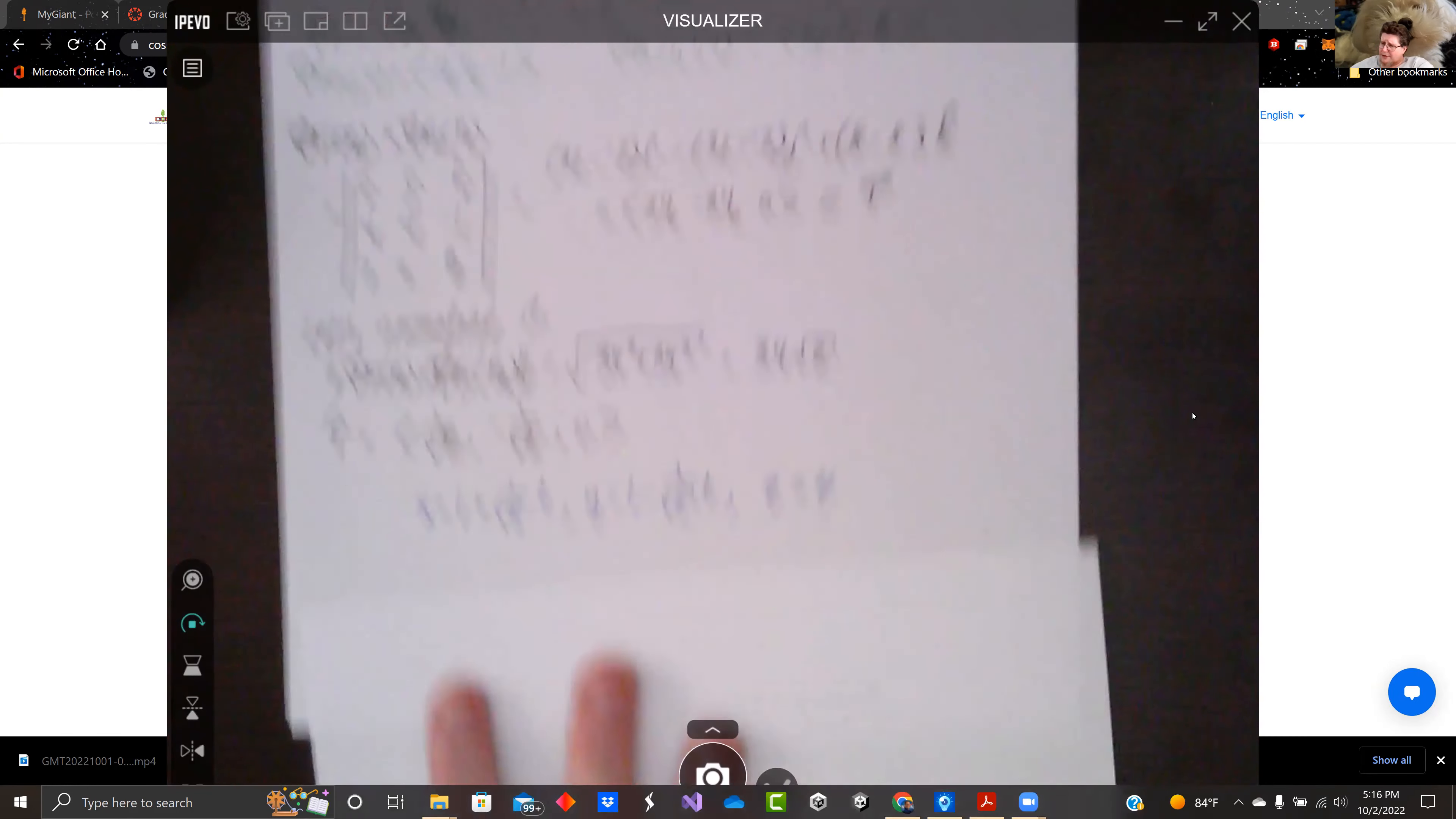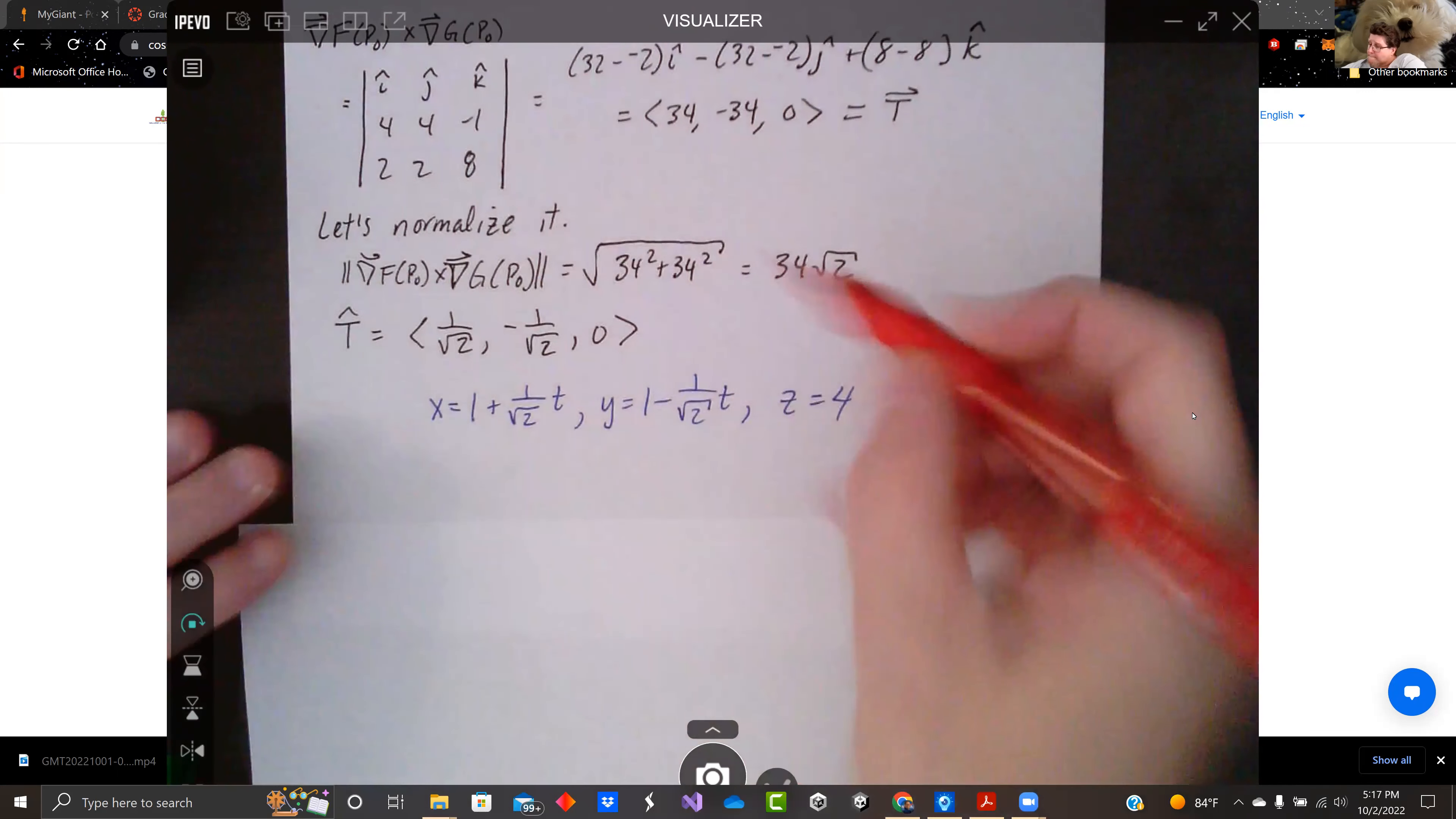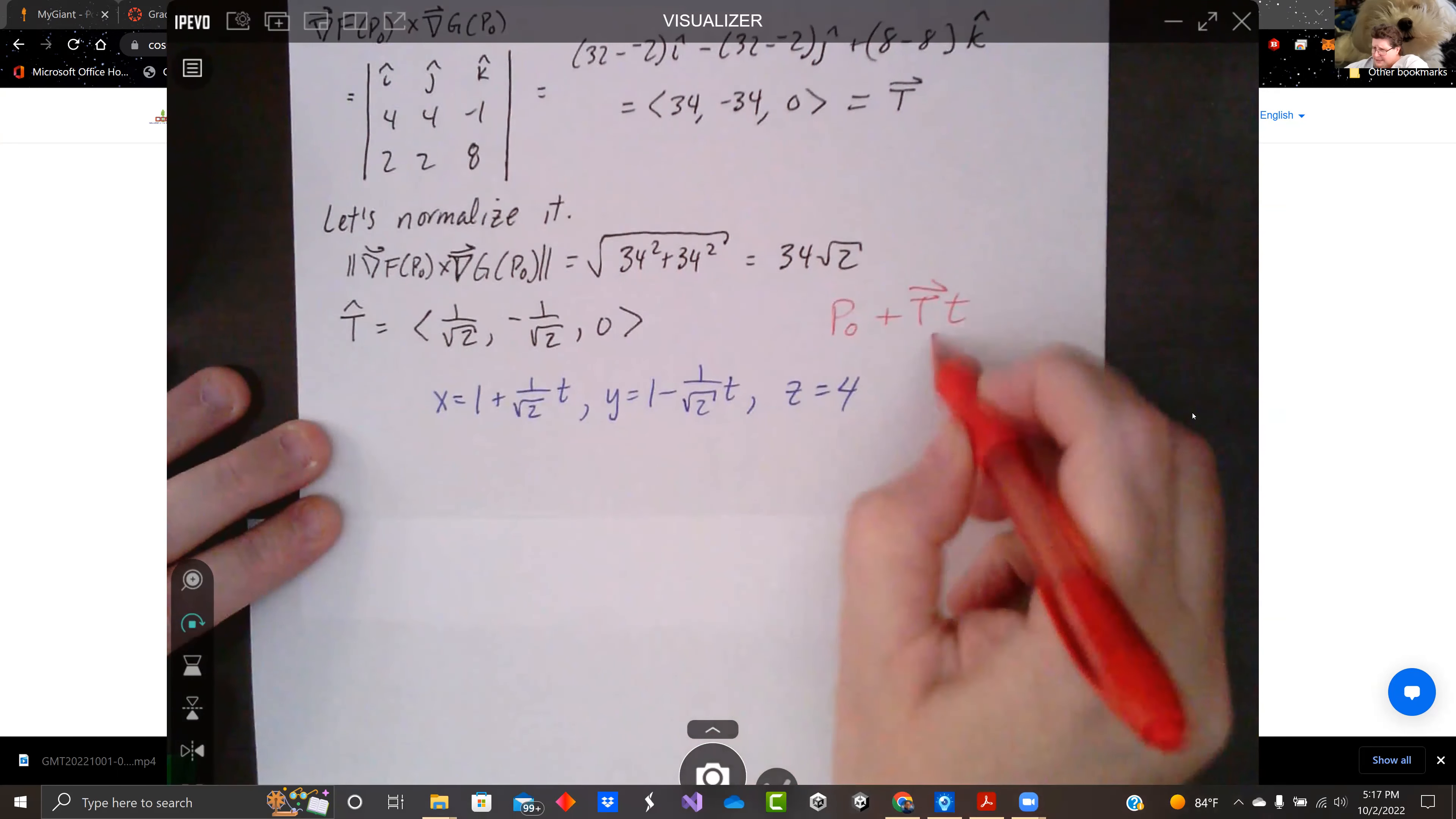And if I want to make the parametric equations, remember we got P0 plus our tangent vector times T. And that gets us these right here.